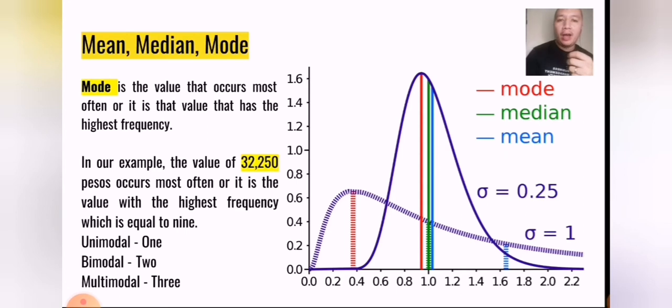And then finally, we have the mode. Mode is the value that occurs most often or it is the value that has the highest frequency. In our example earlier, we have the value of 32,250 that occurred 9 times. It has the highest frequency, which is equal to 9. Now, if you only have one mode, you call that unimodal. If you have two modes, it's bimodal and three upwards, it's multimodal.